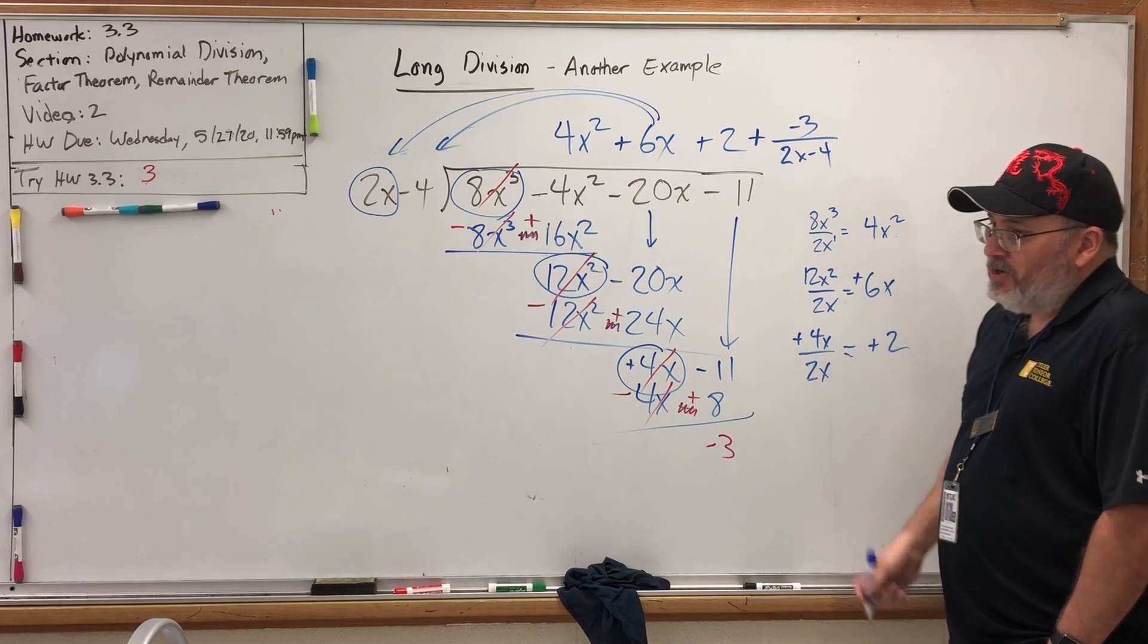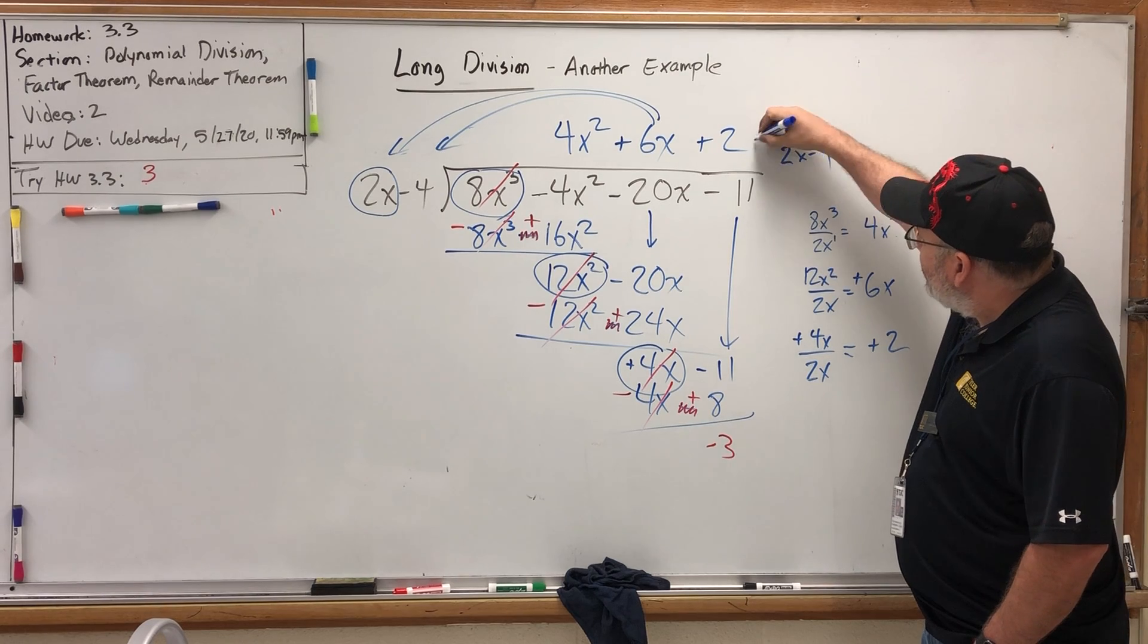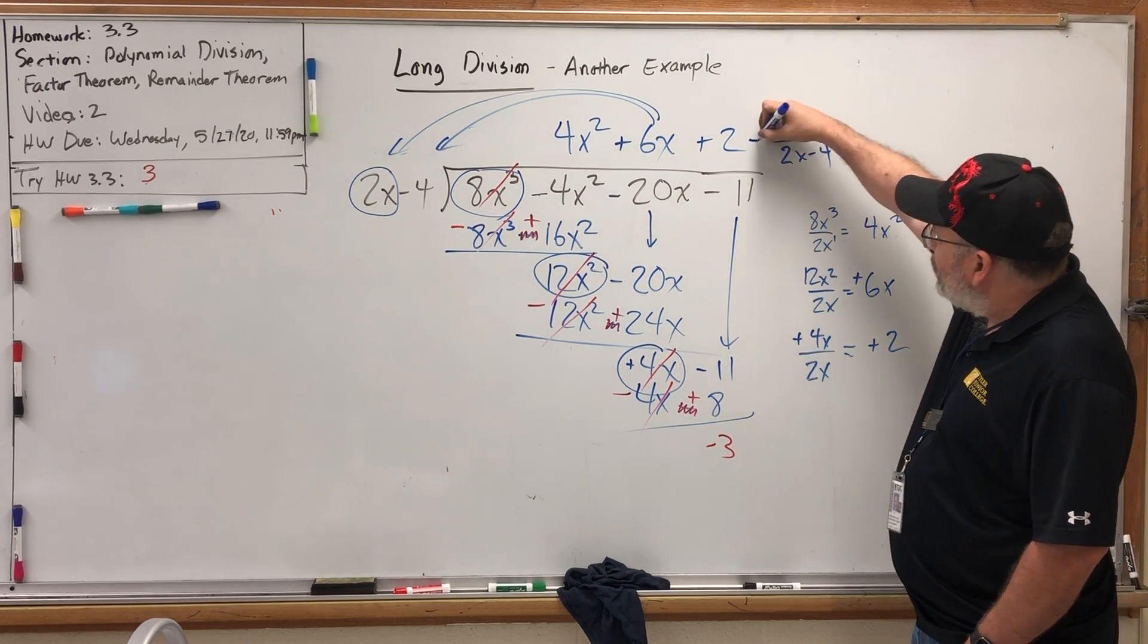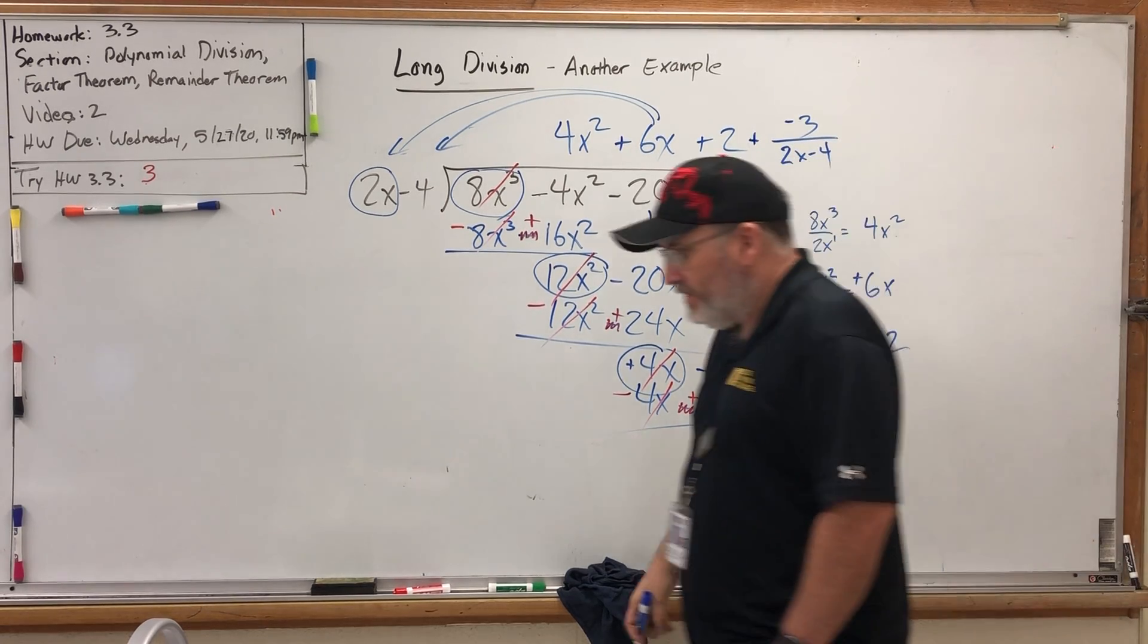But it would also be correct, in my opinion cleaner, if you were to pull the negative out, put it in front, and just write minus 3 over 2x - 4. But if you just want to be consistent, just put a plus, put the remainder on top of the divisor, and then it's over.